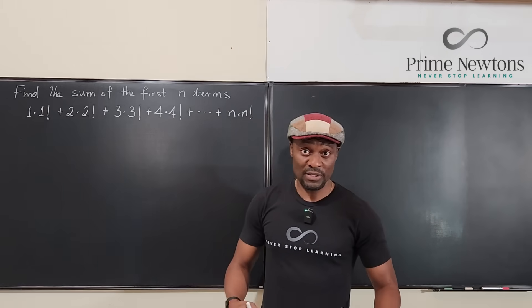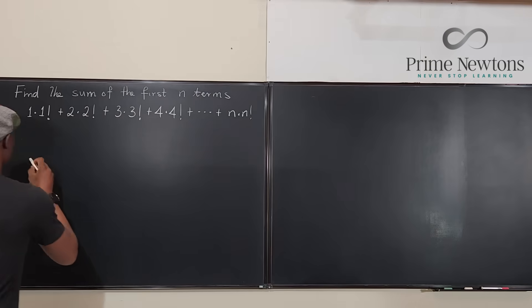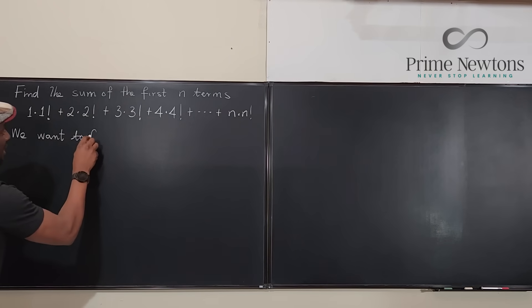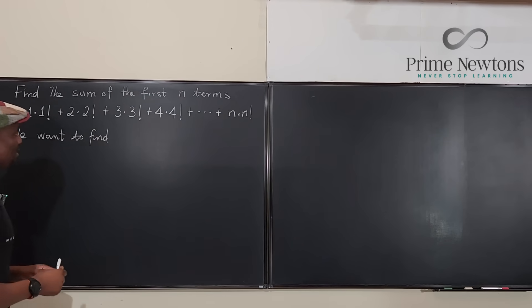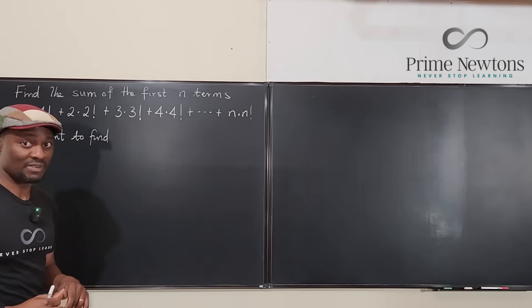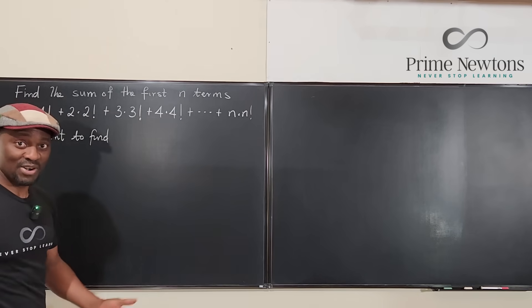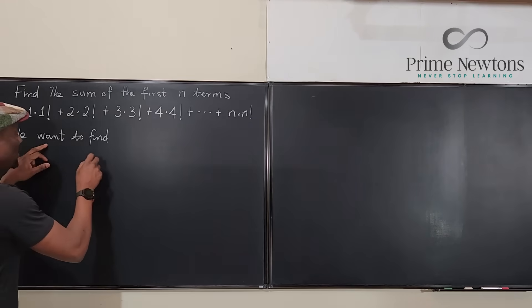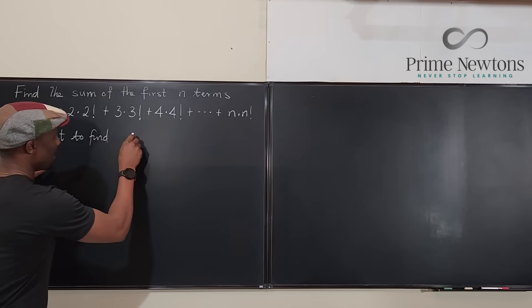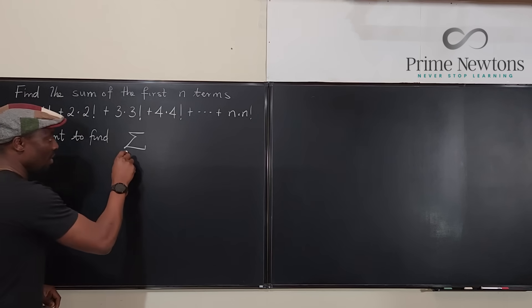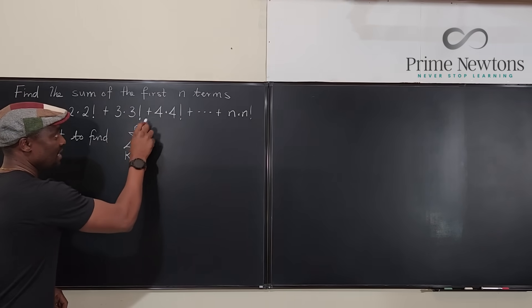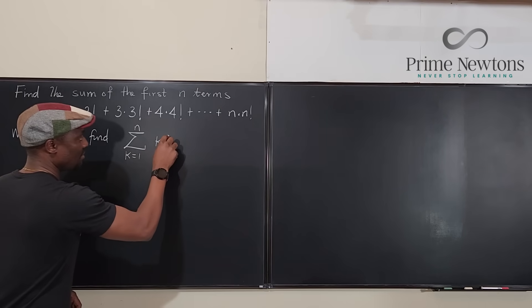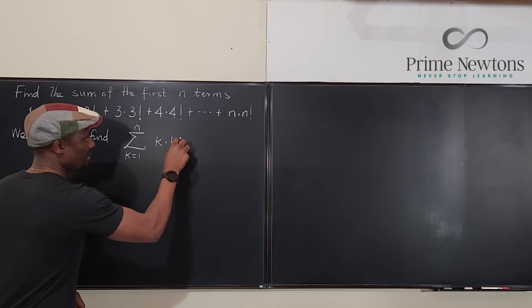But the formula we're trying to compute is, we want to find - I remember that I used to write WTF for want to find, and it has a different meaning in this current world. So I have to write want to find in full. So we want to find the sum starting from k equals 1 to n of k times k factorial.